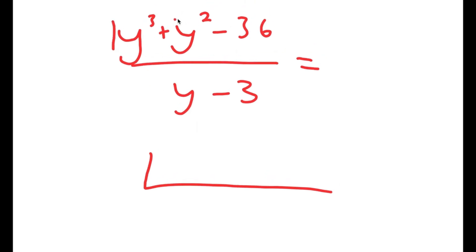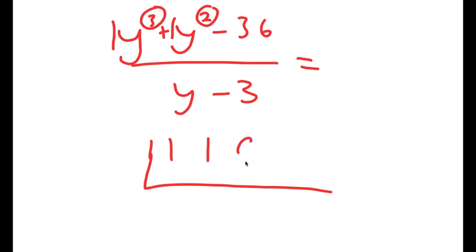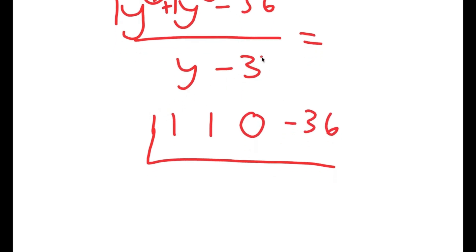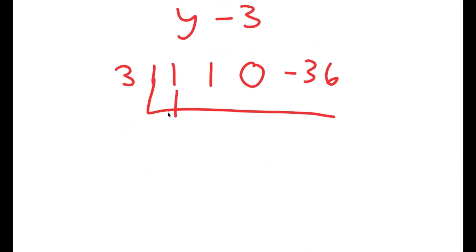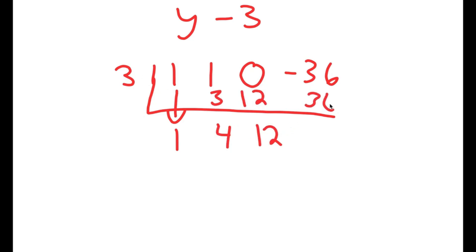Basically, we have our coefficients of our numerator here. The first coefficient is 1, the second one is 1 as well. We're supposed to have a y term here because our exponents go in decreasing order, and we don't have y to the power of 1, so we just say 0. And then finally we have negative 36 at the end. Our denominator value is 3. So now we drop down 1: 3 times 1 is 3, 1 plus 3 is 4, 3 times 4 is 12, 0 plus 12 is 12, 3 times 12 is 36, and negative 36 plus 36 is 0. So our remainder is 0.